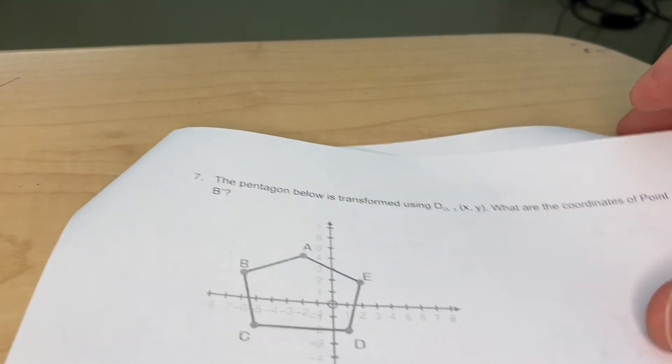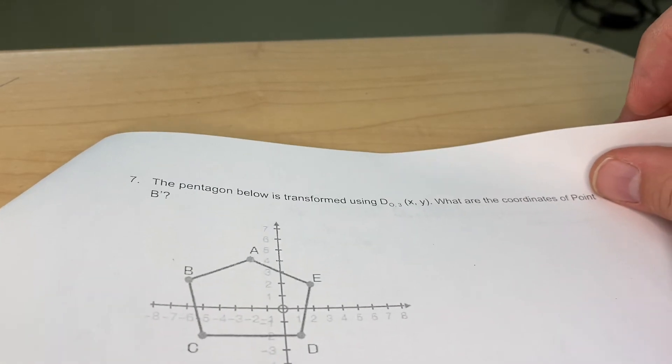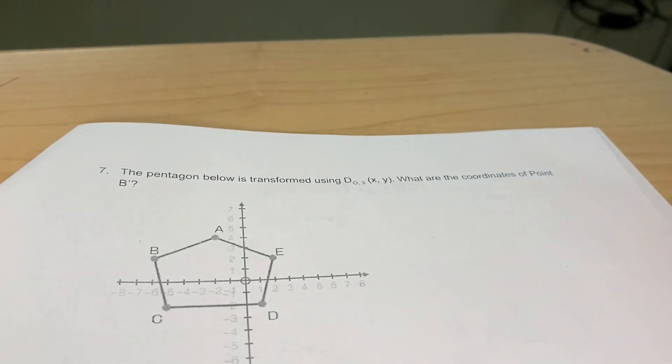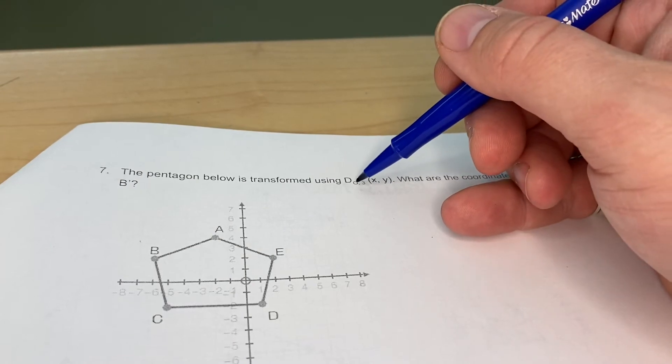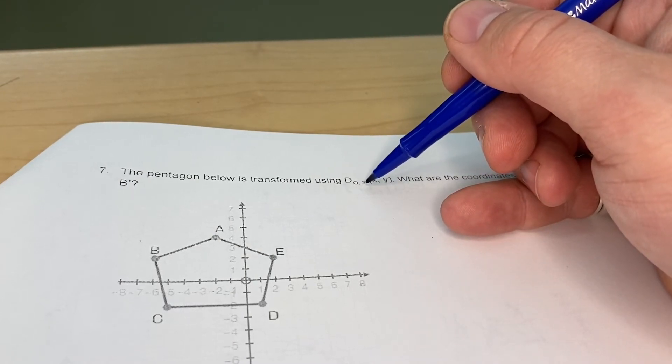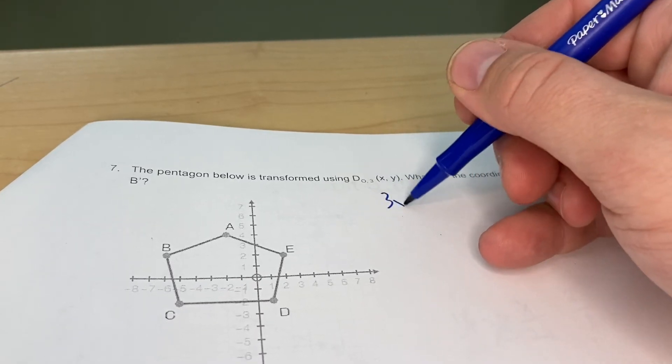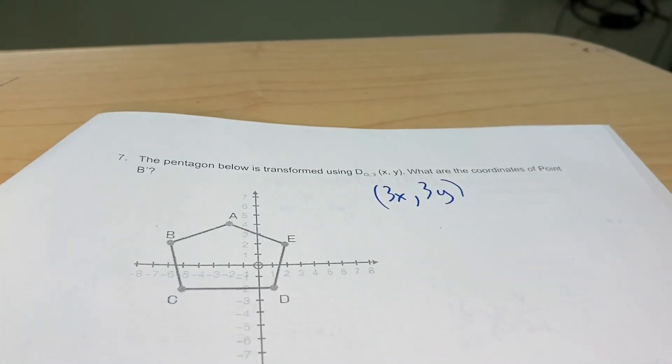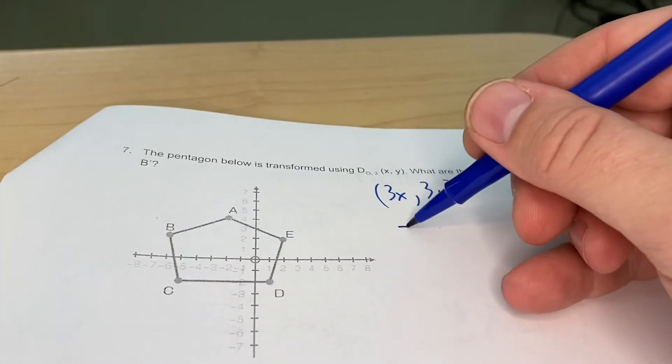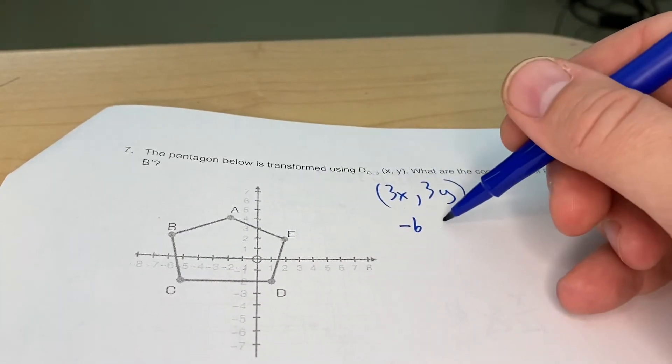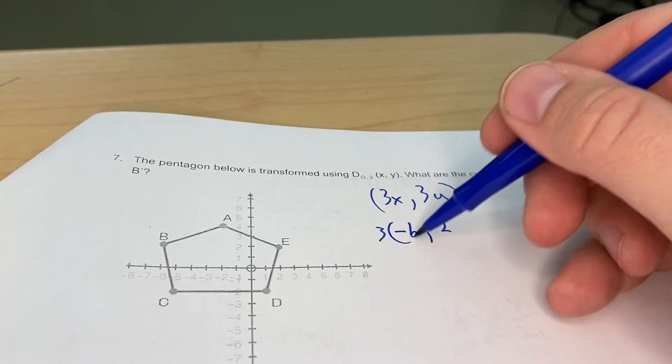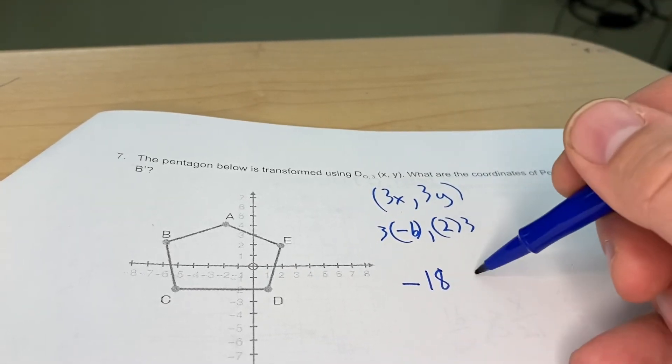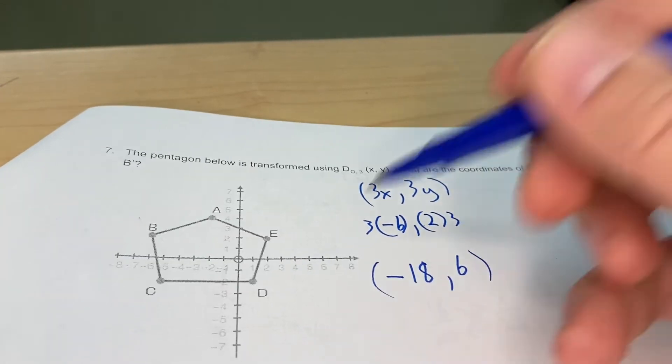Question number seven, the pentagon below is transformed using D subscript O, 3. What are the coordinates of point B prime? So this means I'm going to dilate about the origin and I'm using a scale factor of 3. So I'm just going to take whatever my x value is and multiply it by 3 and whatever my y value is and multiply it by 3. In this case, I'm just looking for point B and point B is at negative 6, 2. So I'm going to multiply both of those by 3. So I'm going to get negative 18 and positive 6, and that will be point B prime.